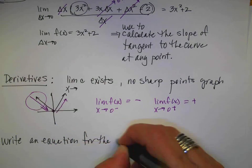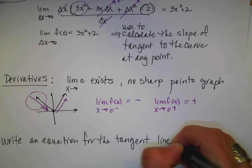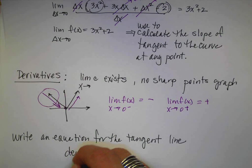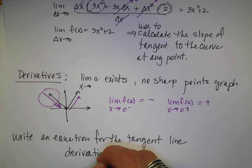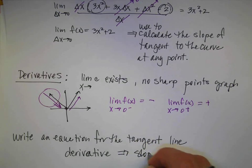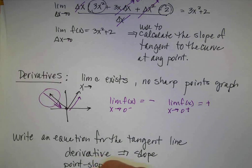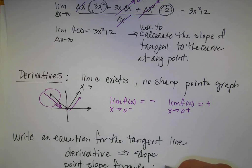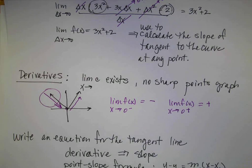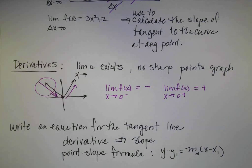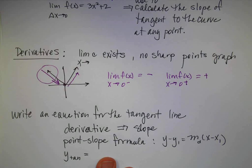If I want to write an equation for the tangent line - not just find the slope but write the actual equation - I use my derivative to give me the slope. Then I use the point-slope formula, the fastest way to write an equation for a line: y - y₁ = m(x - x₁), where m is my derivative slope. When done, put it into slope-intercept form and report it as y-tangent so they know it's the equation of the tangent line. Always identify your answers well.